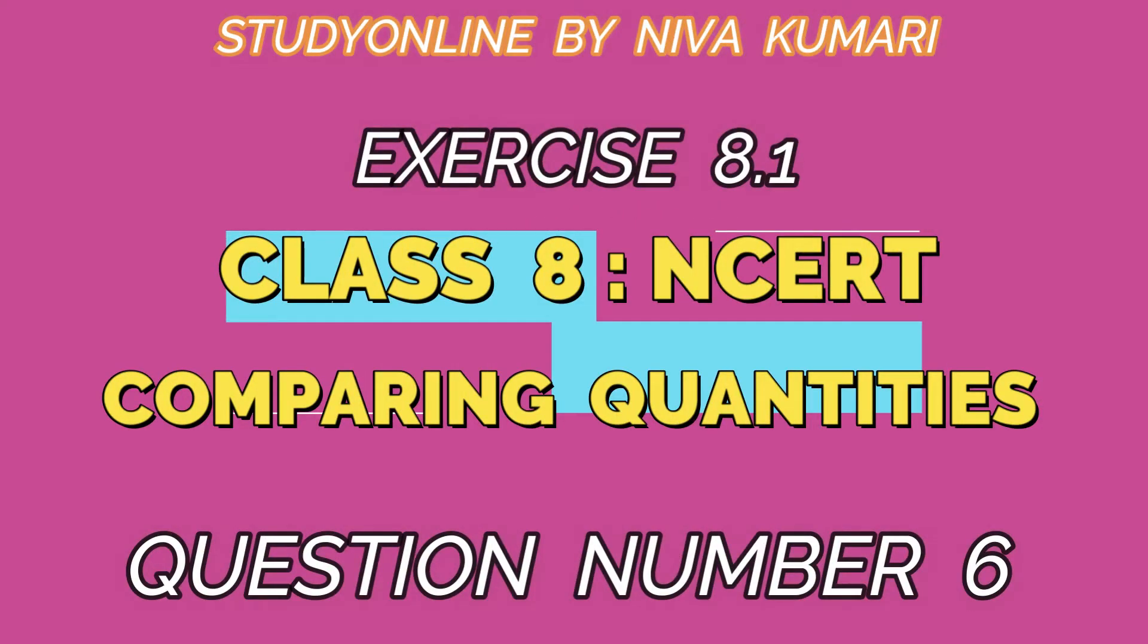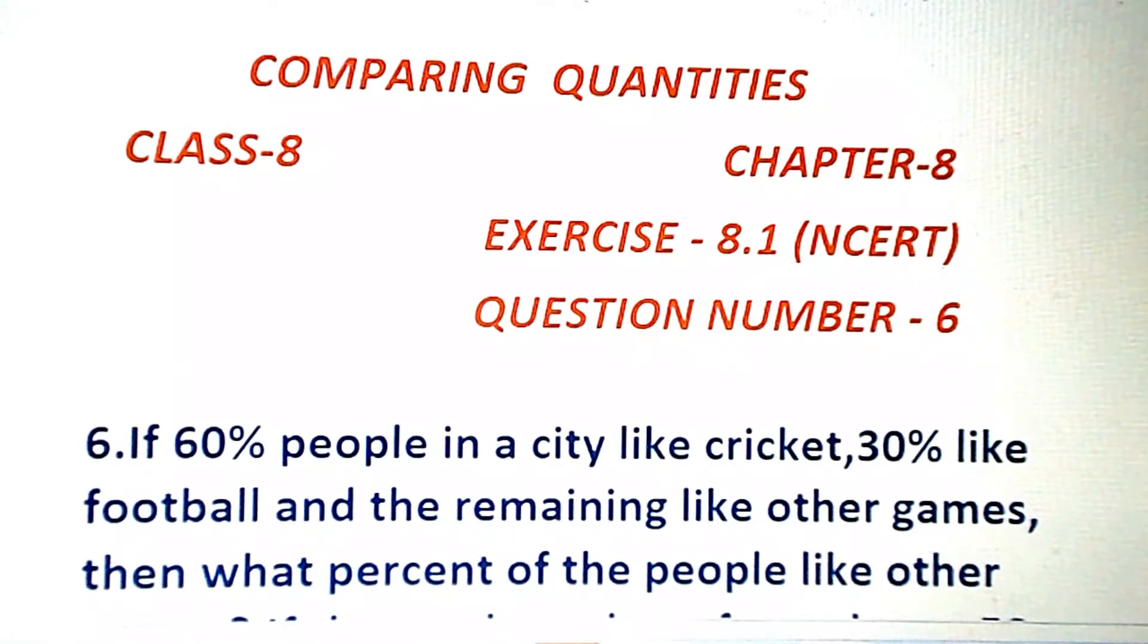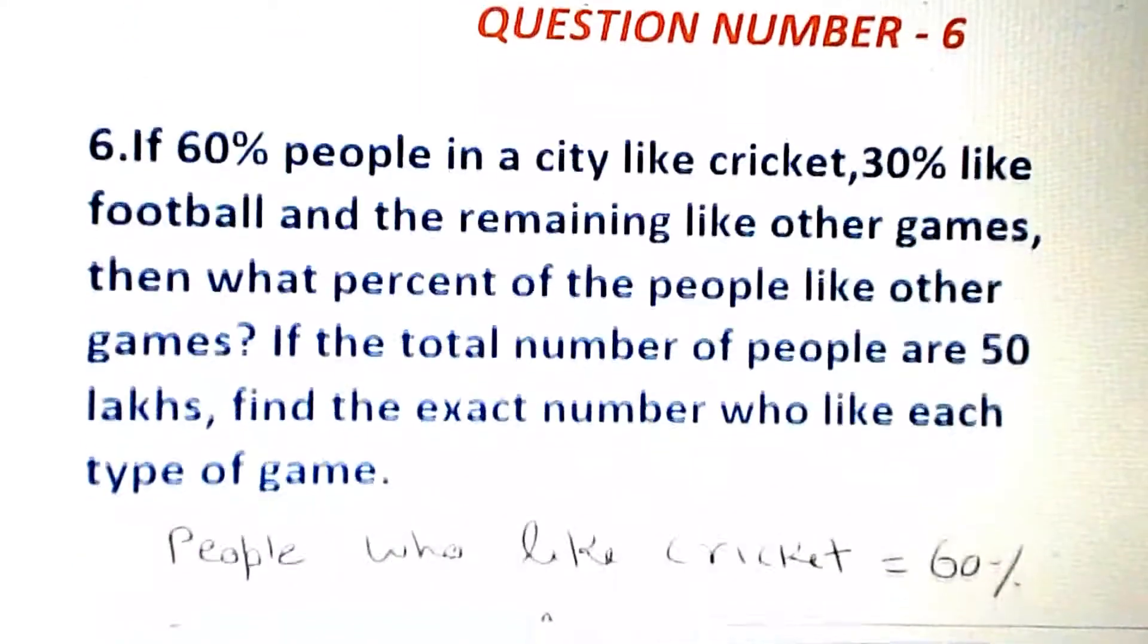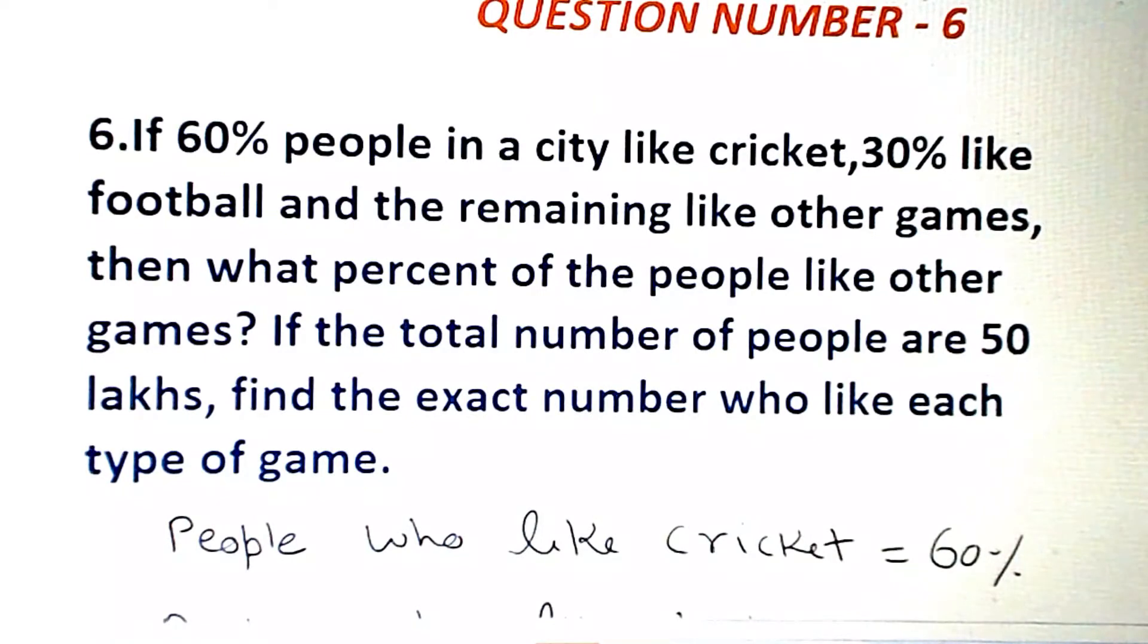Hello friends, welcome to my channel Study Online. In this video, I will do Exercise 8.1, Question Number 6. If 60% people in a city like cricket, 30% like football, and the remaining like other games, then what percent of the people like other games? If the total number of people are 50 lakhs, find the exact number who like each type of game.